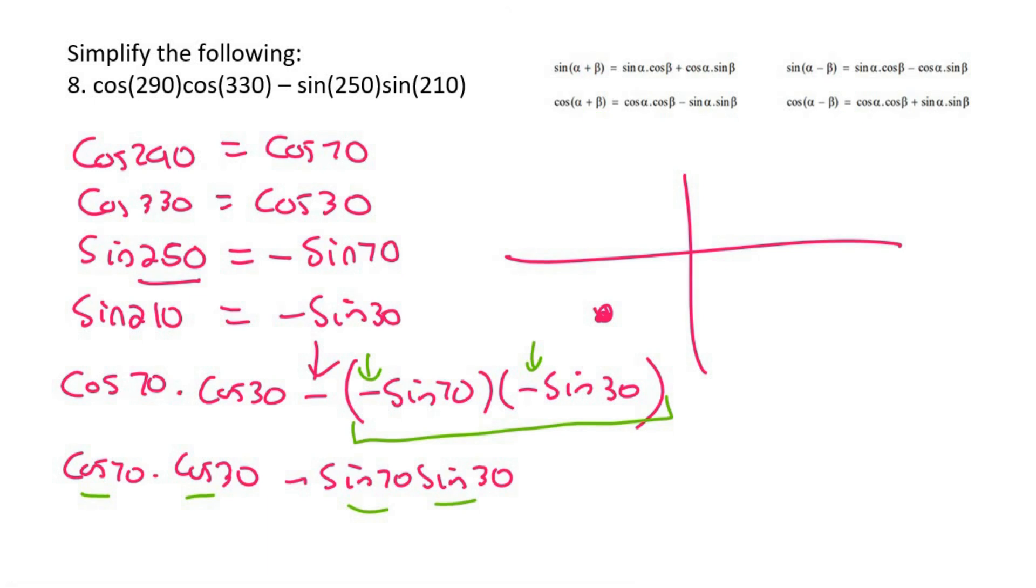So we have this one over here. And so that's going to turn out to be cos and then we're going to add the angles together. So we're going to say 70 plus 30 and that's going to give us the cos of 100.